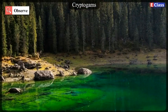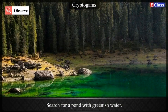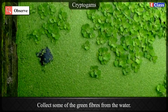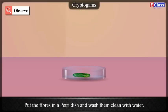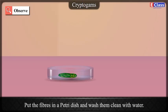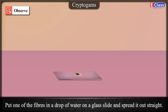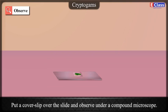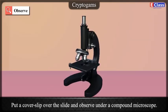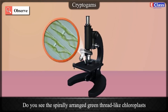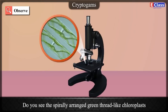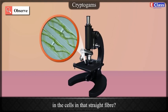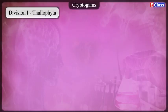Cryptogams — Observe: Search for a pond with greenish water. Collect some green fibres from the water. Put the fibres in a petri dish and wash them clean with water. Put one fibre in a drop of water on a glass slide and spread it out straight. Put a cover slip over the slide and observe under a compound microscope. Do you see the spirally arranged green thread-like chloroplasts in the cell? This plant is known as Spirogyra.